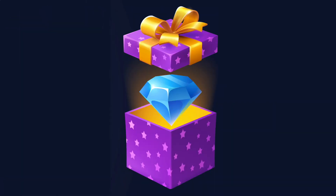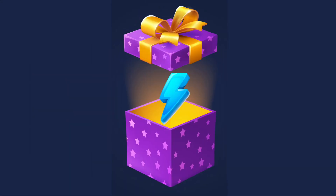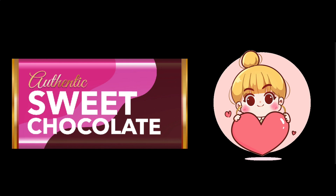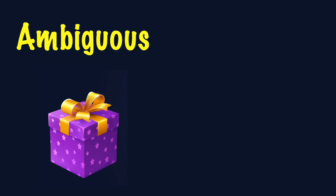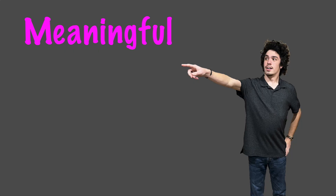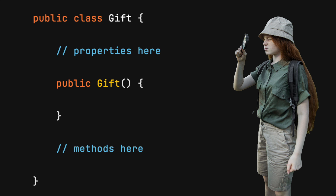If you receive a gift, what does it contain? It could be anything. Unless you have prior knowledge, opening it is the only way to find out. Now if you receive a chocolate bar, there's no need to open it. Everyone knows the contents of a chocolate bar. One item was ambiguous, which required closer inspection. The other item was familiar and did not. The name given to a class is similar. It should be meaningful and reveal the intent. If other developers need to inspect the contents of a class, then the name is not meaningful.